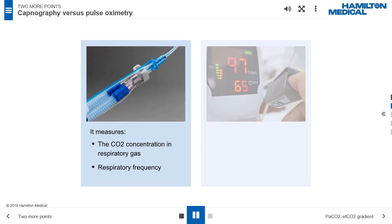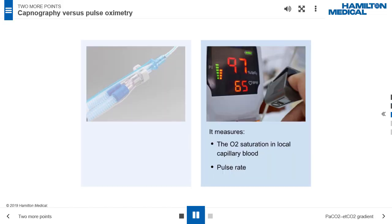Capnography measures the CO2 concentration in the respiratory gases and the breathing frequency. The results reflect the status of CO2 production, transport, perfusion, and elimination. Pulse oximetry measures the oxygen saturation of capillary blood in the local tissue. The saturation means how many percent of hemoglobin of the capillary blood is oxygen bound. It also measures the pulse. The results reflect the status of oxygenation.